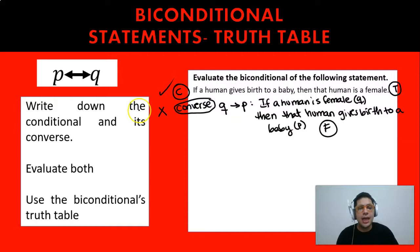So that means that this is a false statement. So because we saw that the conditional is true and the converse is false, one is true and the other one is false, so that means that the biconditional is false.